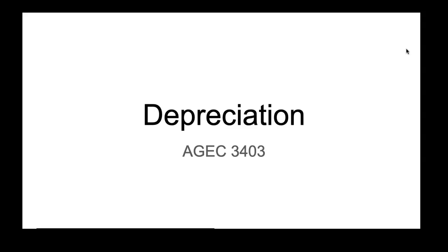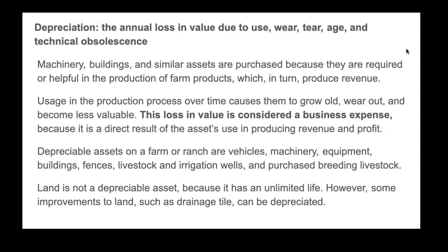This is a short lesson about depreciation. Depreciation is how we value an asset that we use over time in order to create revenues or to produce products which are sold to create revenues. Depreciable assets include machinery, trucks, other vehicles, fences, barns, buildings, livestock, and irrigation wells. Land is not a depreciable asset, but some improvements to land can be depreciated — for example, a septic system with a useful life of around 50 years.